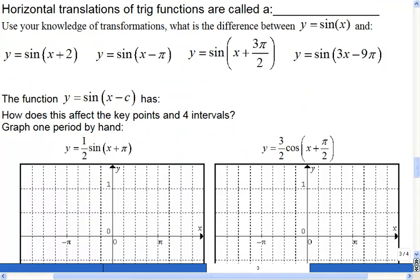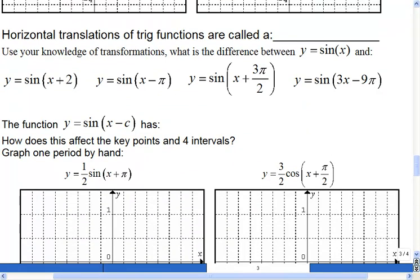So horizontal translations, when we move the graph, I believe the physics people stuck us with this, but we call a horizontal translation a phase shift. So when you hear the words phase shift, what they're telling you is how much it's been moved left or right. So that's what we're going to work on now, is we're going to see how this phase shift changes the graph.